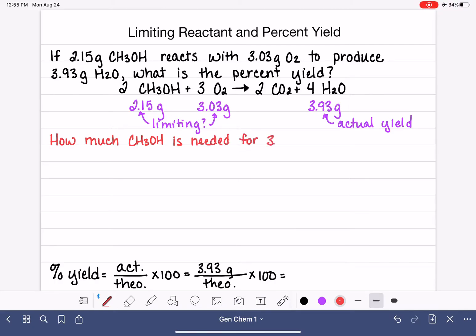And the problem that I'm going to write goes: how much CH3OH is needed to react with 3.03 grams of O2? So what I'm doing here is trying to figure out if I have this 3.03 grams of O2, how much methanol do I actually need? And once I figure that number out, I'm going to ask myself if I actually have enough methanol, CH3OH, to react with this amount of O2.